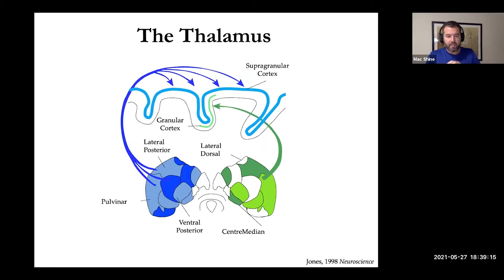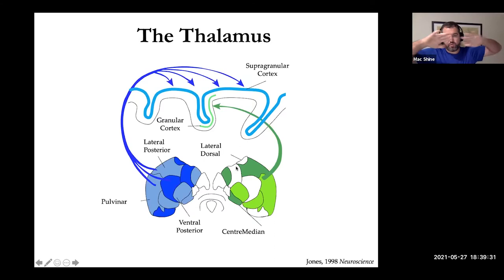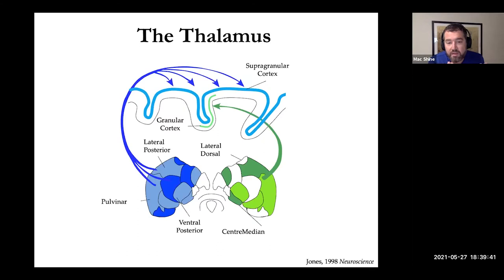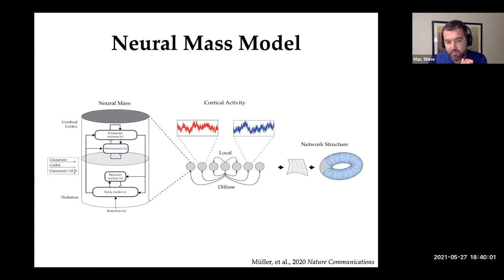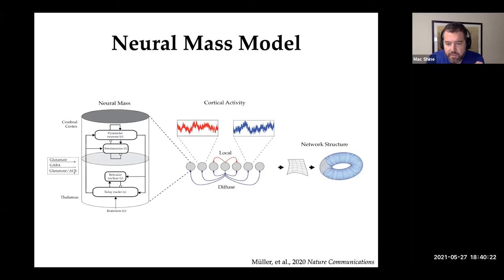The 'core' type — the traditional lateral geniculate nucleus to V1 connection — projects into the granular layers of the cerebral cortex. In contrast, the 'matrix' type, of which the intralaminar nuclei are an extreme version, projects diffusely to the supragranular regions of the cortex as well as layer 5a. These are extremely different topologies — precise versus diffuse, and to different regions of the cortical microcircuit. We have a good understanding of the core type, where message-passing is a decent analogy, but the diffuse connections are more nebulous — we can't use message-passing when connections are one-to-many.